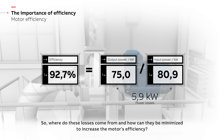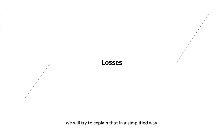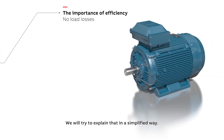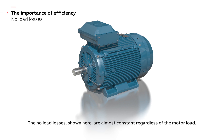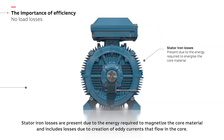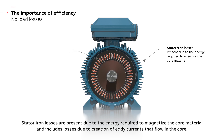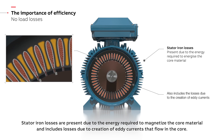So where do these losses come from and how can they be minimized to increase the motor's efficiency? The no-load losses shown here are almost constant regardless of the motor load. Stator iron losses are present due to the energy required to magnetize the core material, and include losses due to the creation of eddy currents that flow in the core.